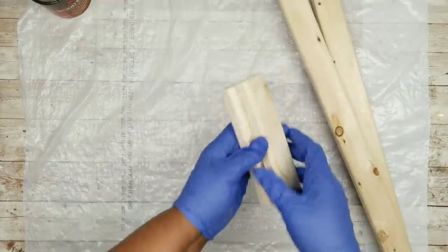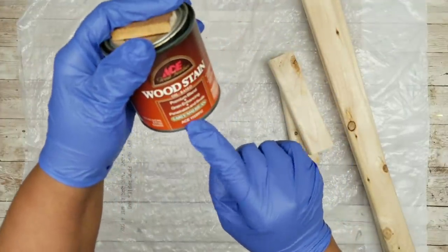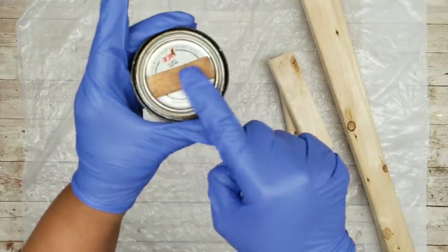Now that all of our wood pieces are cut, we will be staining these. And this time I will be using some early American stain to stain my pieces.